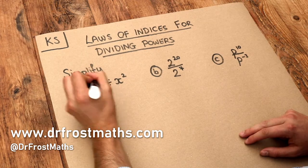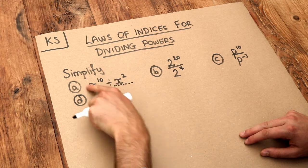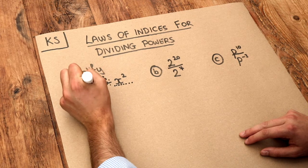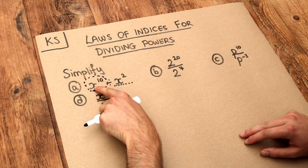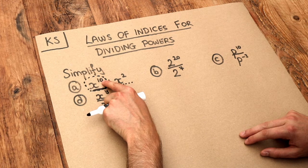This whole thing, x to the 10, is known as a power, and this x squared here is a power. We're dividing a power by a power. Remember, the whole thing is known as the power. The x is known as the base, and the 10 is known as the index or the exponent.